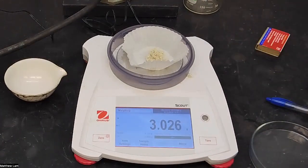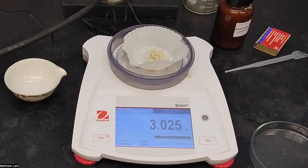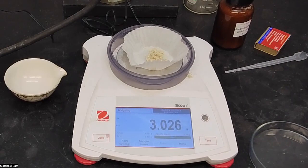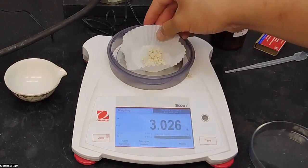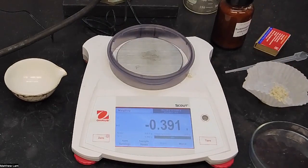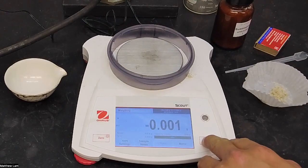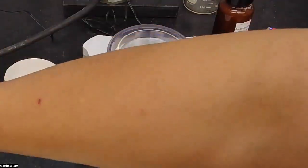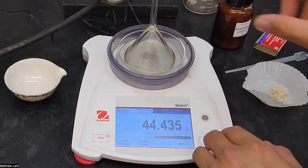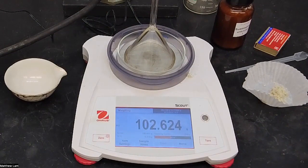We're going to put 3.026 grams. That is our sample. We want to again weigh out the mass of our petri dish and clean funnel, which is 102.625 grams.